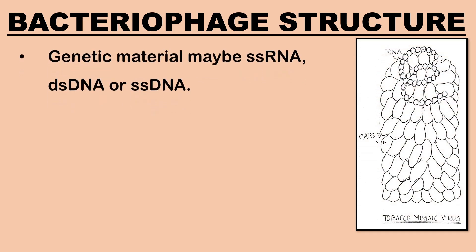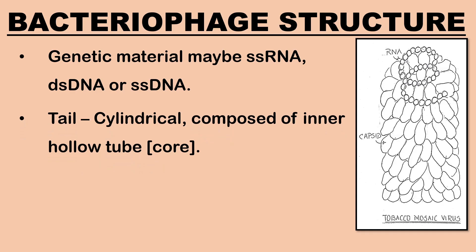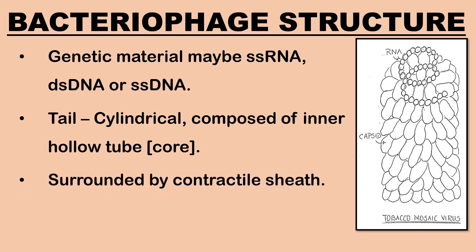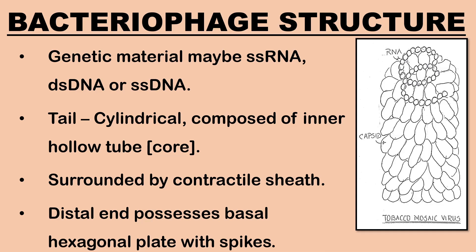The genetic material may be single-stranded RNA, double-stranded DNA, or single-stranded DNA. The tail is cylindrical and composed of an inner hollow tube called core, surrounded by a contractile sheath with 24 annular rings. The distal end of the tail consists of a basal hexagonal plate that has spikes or flexible tail fibers at each corner.